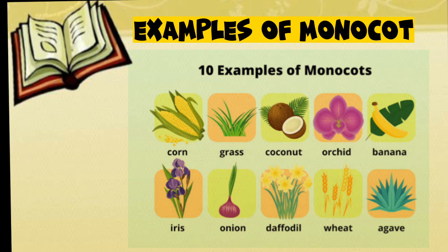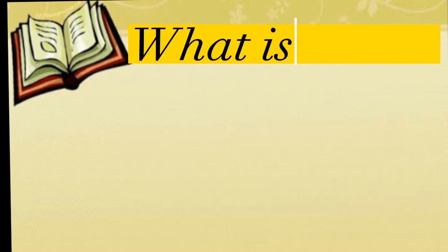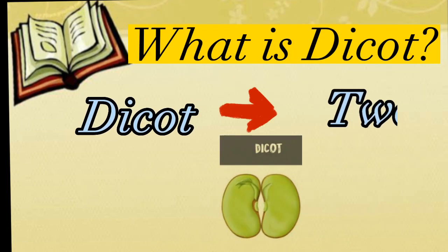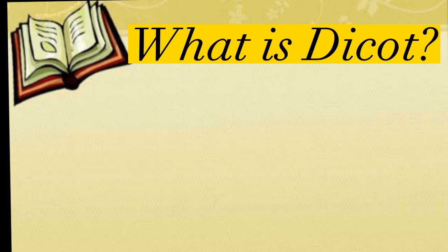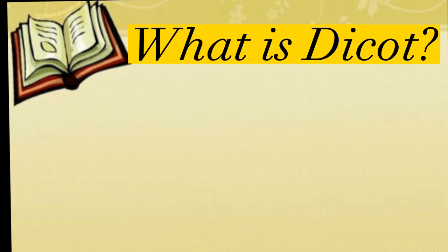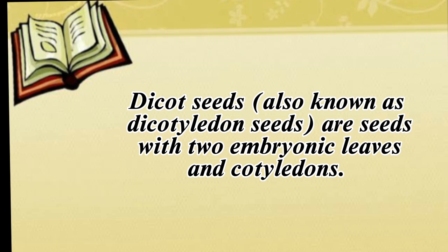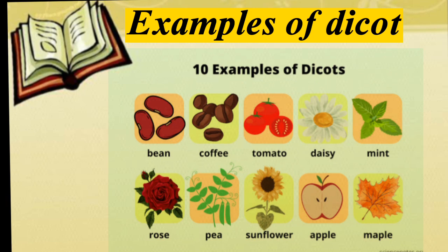Now let's discuss what is dicot. Dicot means two — it means two cotyledon seeds. Dicot seeds, also known as dicotyledon seeds, are seeds with two embryonic leaves and cotyledons.